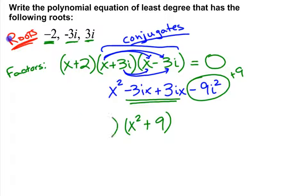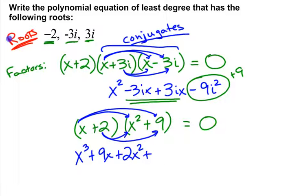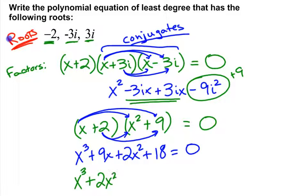We take that x squared plus 9 and multiply by the other factor, x plus 2. So x times x squared is x to the third, x times 9 is 9x, 2 times x squared is 2x squared, and 2 times 9 is 18. Rearranging into proper order, our equation is x to the third plus 2x squared plus 9x plus 18 equals 0.